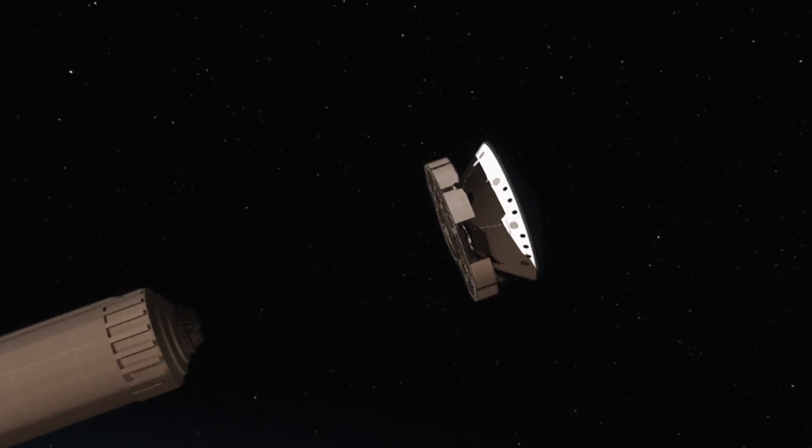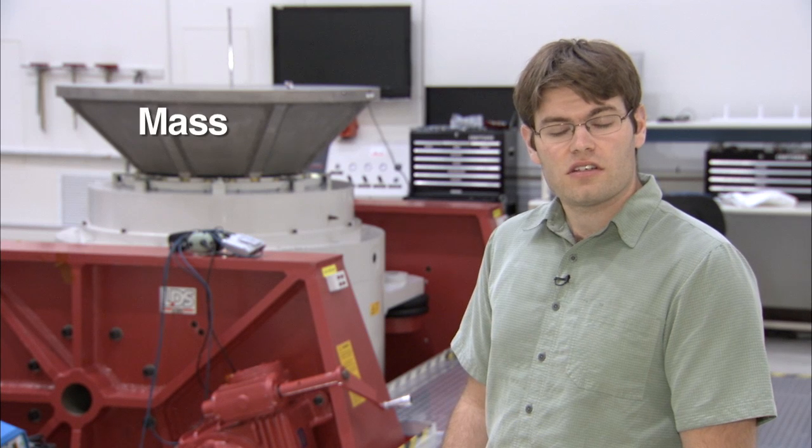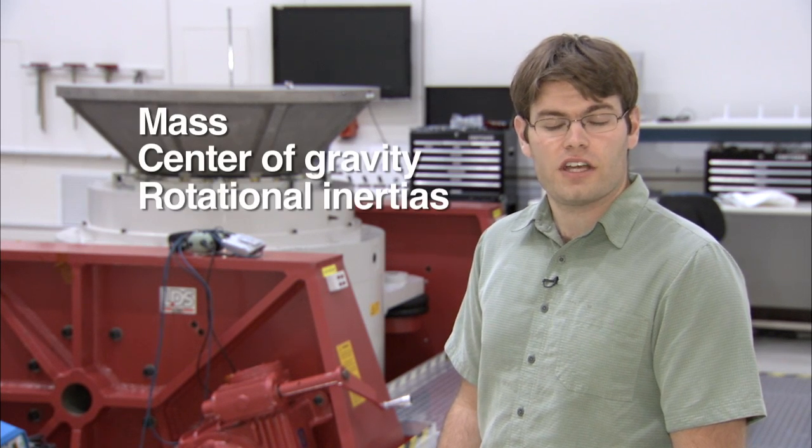Mass properties describe the way an object moves through space. There's three mass properties that we measure: mass, center of gravity, and the rotational inertias.